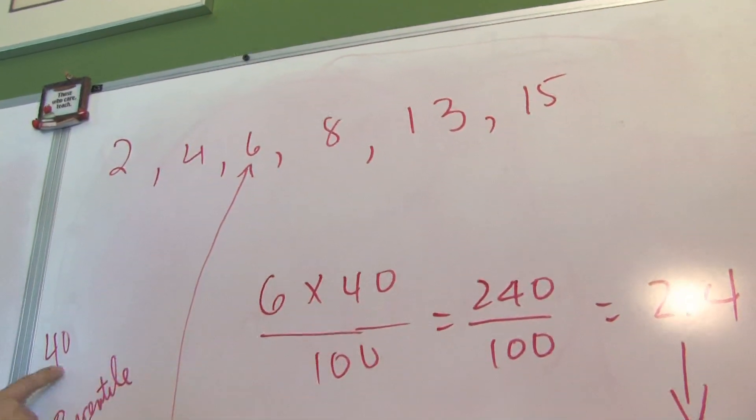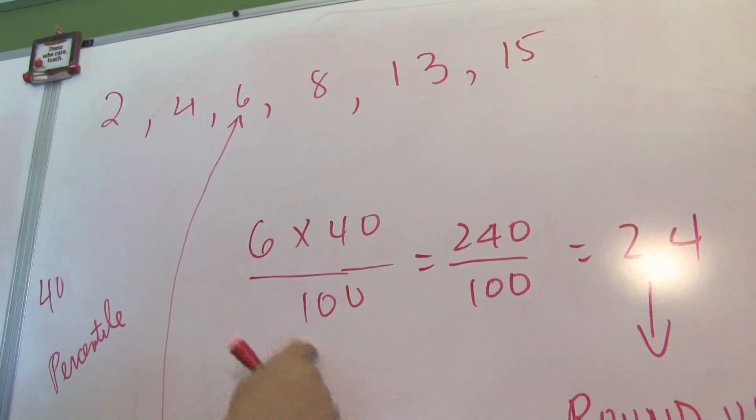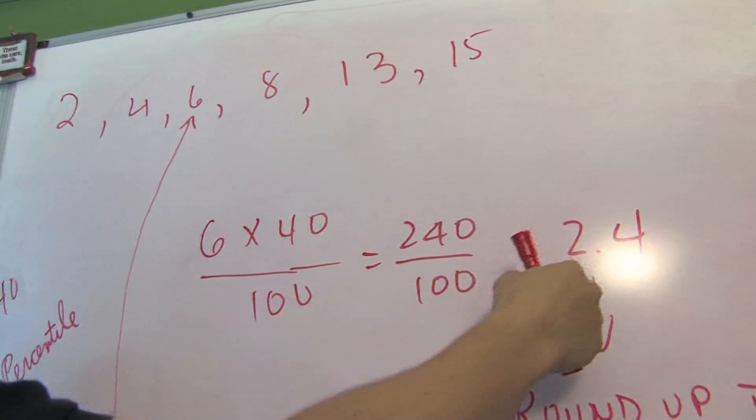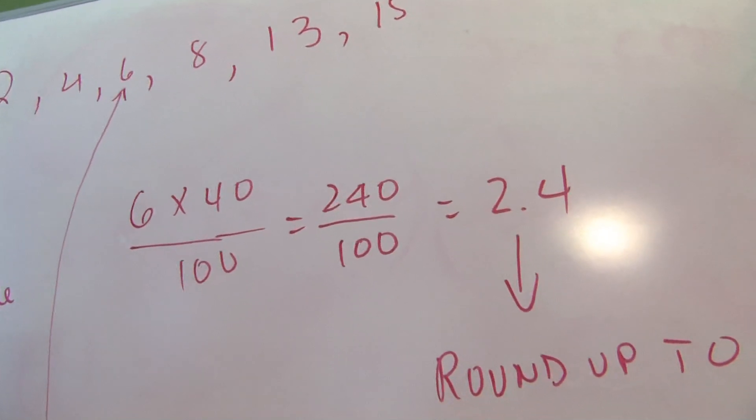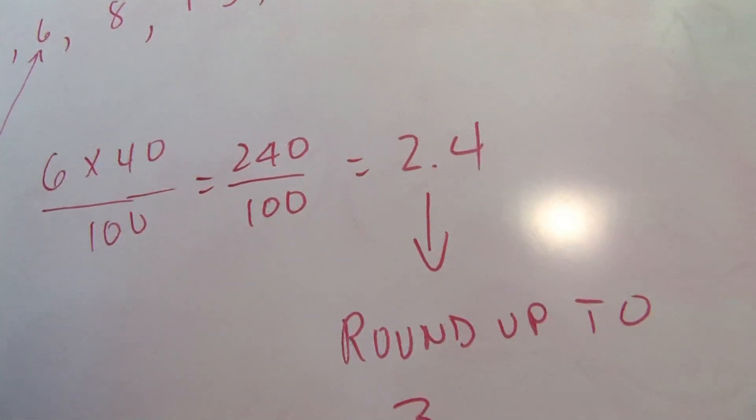You want the 40th percentile - that's what they're asking for. Divide by 100. When you do the arithmetic, you get 2.4. Round up to the nearest whole number, which is 3.